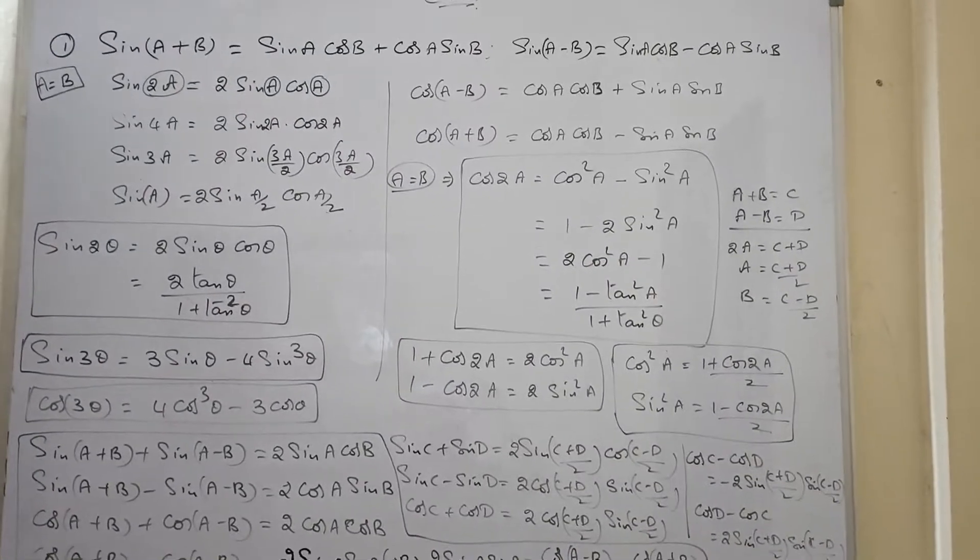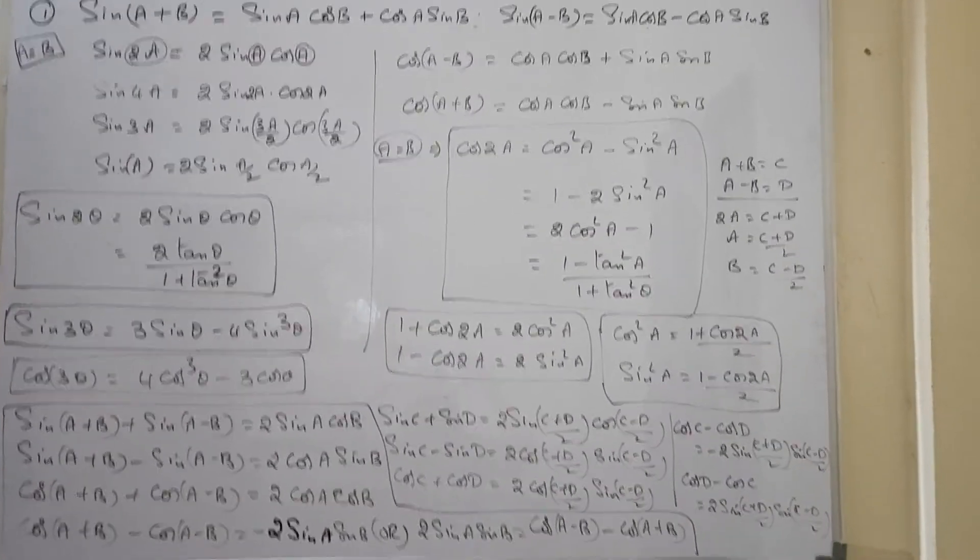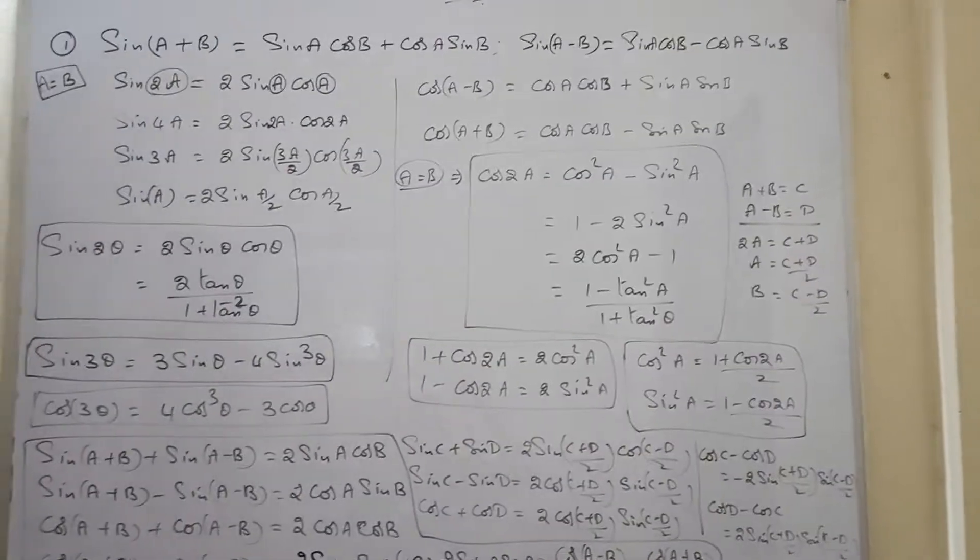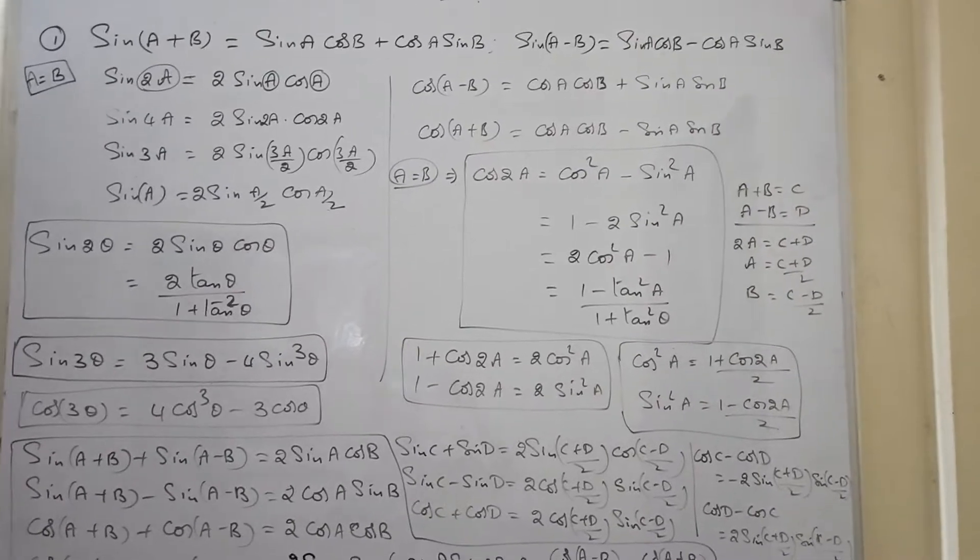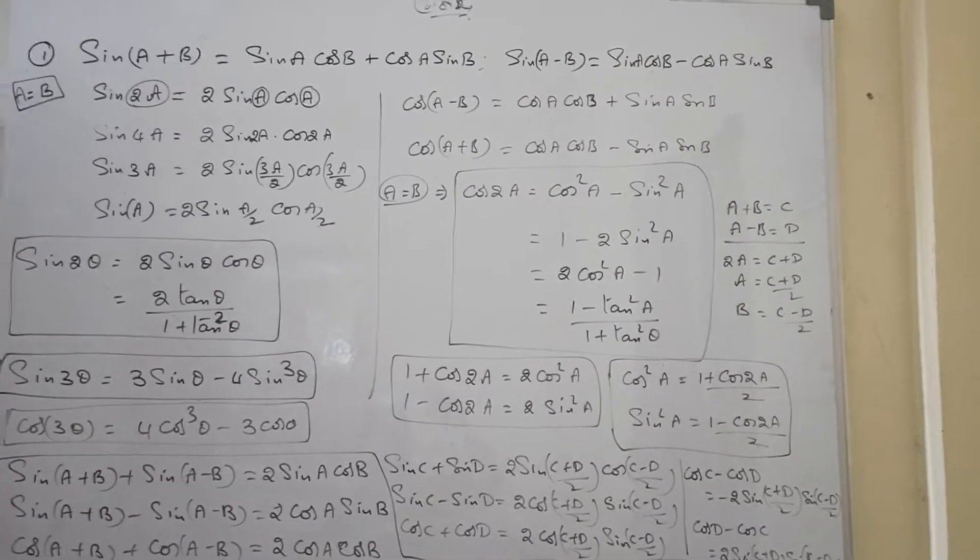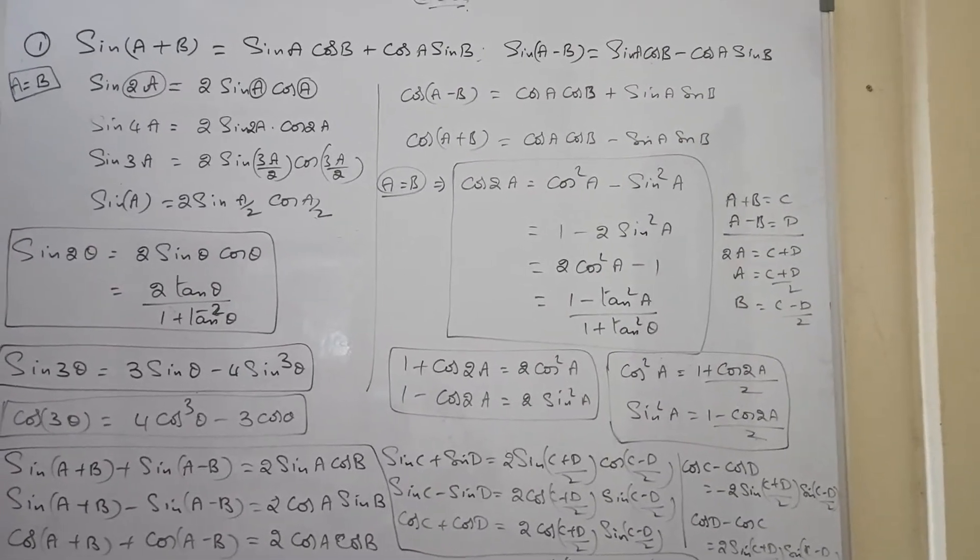Hi students, these are the trigonometry basic formulas: sine of a plus b, sine of a minus b. And if a is equal to b, we will get the sine 2a formula. Sine 2a is 2 sine a cos a.